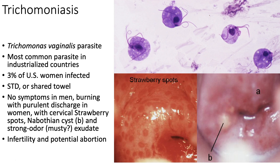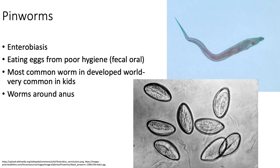The last thing I'm going to talk about is pinworms. Pinworms cause enterobiasis - it's a fecal-oral transmission. I could have talked about a lot of different parasites, a lot of different helminths. Pinworms are a helminth - these are just really big worms. I threw pinworms on here because it's the most common worm in the developed world. Most people in the developed world don't get tapeworms, but they do get pinworms, especially kids, because kids are gross and they accidentally get poop in their mouths from their friends. The worms crawl out of your butt at night and it's really itchy - just not a great time. That is the last disease we'll be talking about in this three-part series.